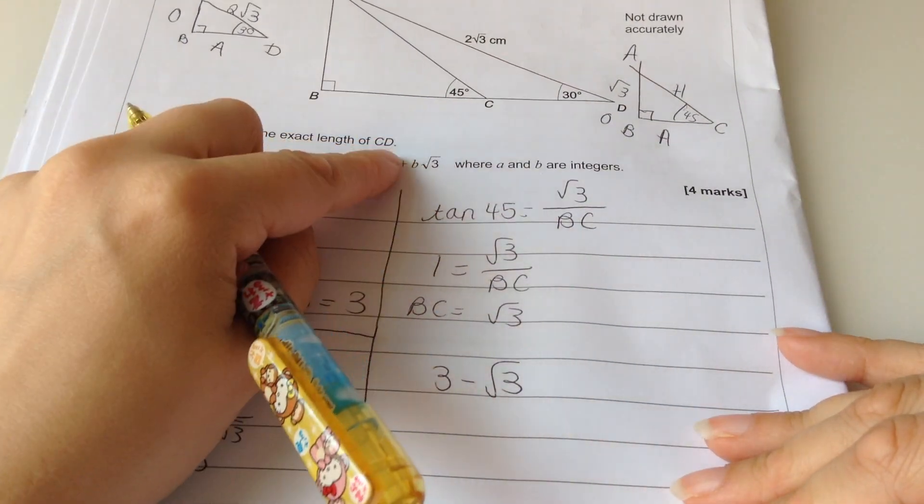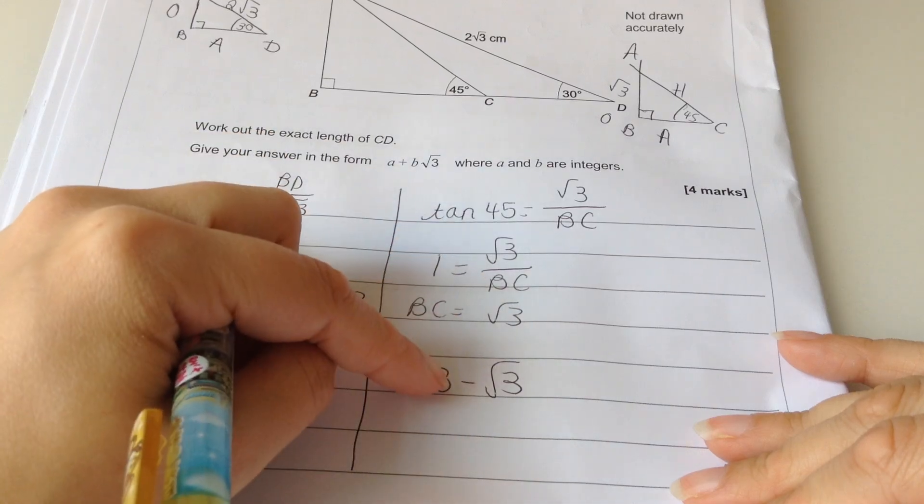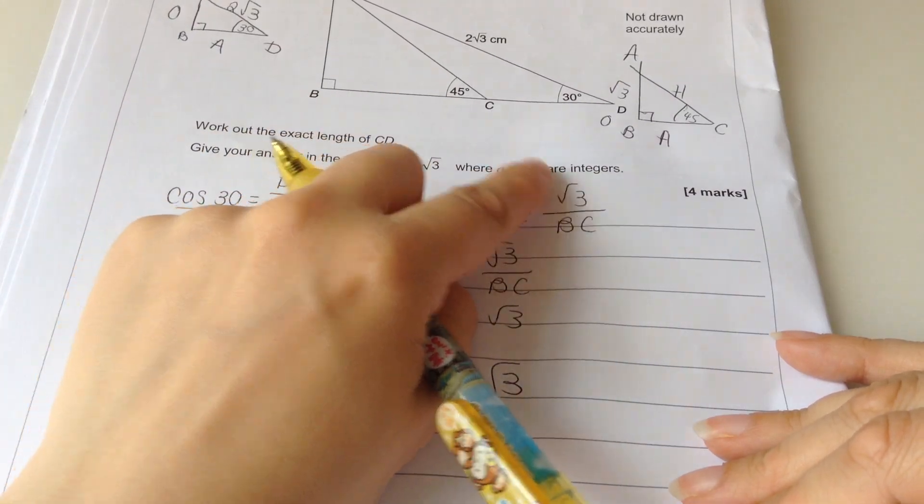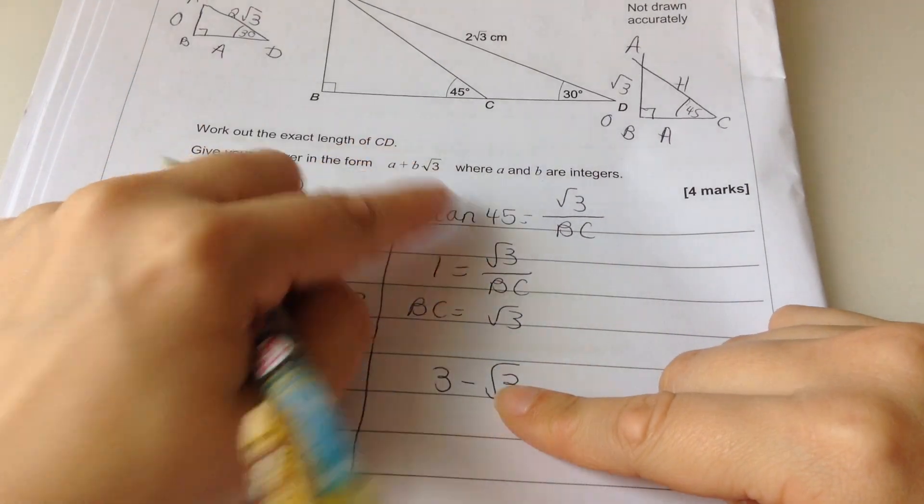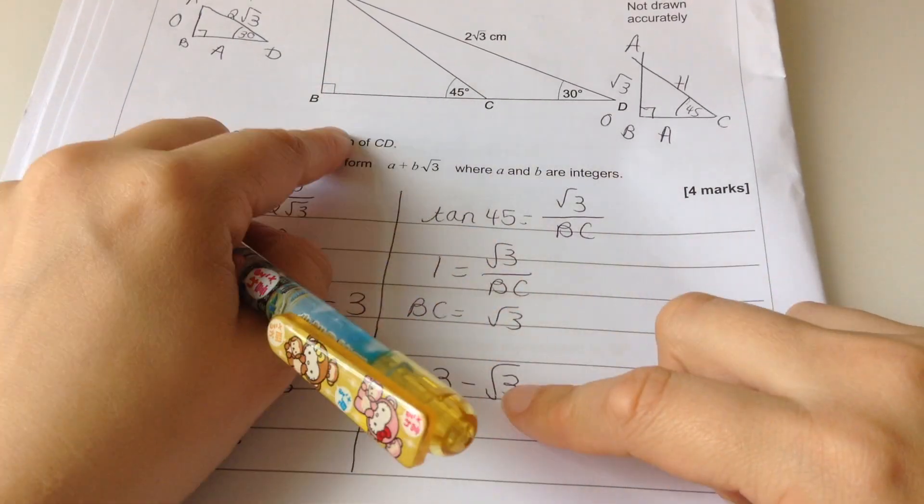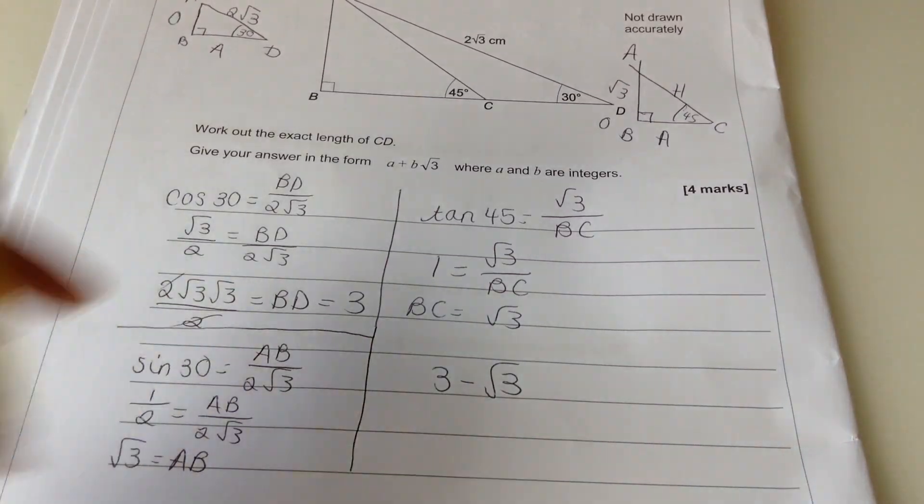Okay. So, C to D is going to be 3 minus root 3. Which, you might be like, oh, no, but they add a plus and a minus. Nope. It's fine because A and B are integers. So, in your case, I mean my case, B is minus 1 and A is 3. But I don't need to write that. You can just write that.